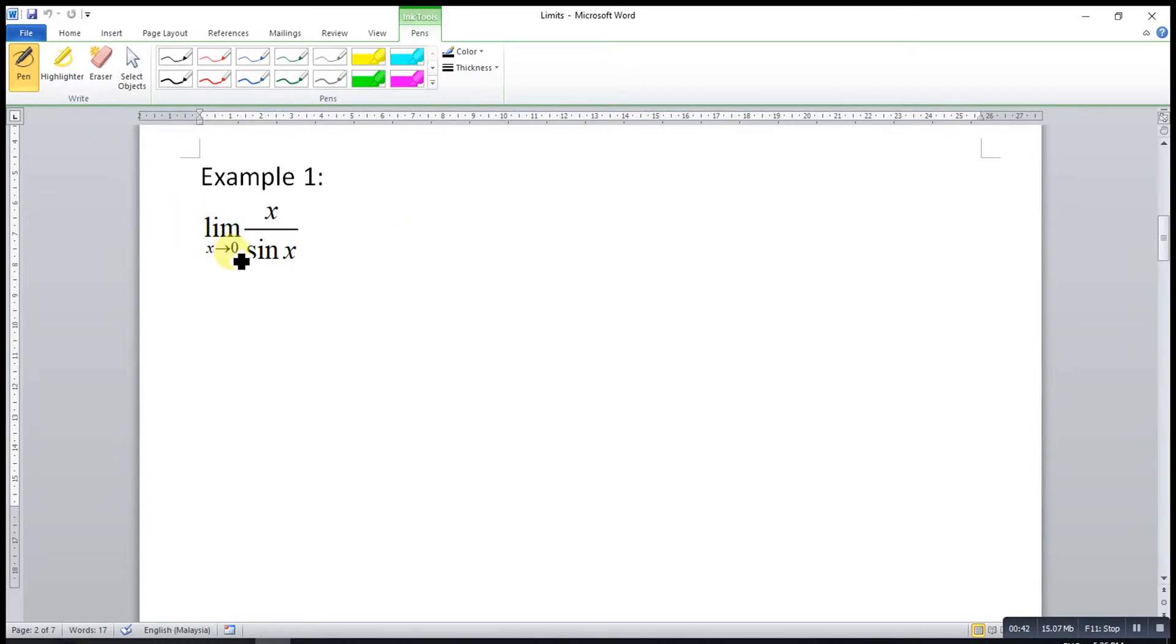If we substitute 0 to this function, the numerator will result as 0 and also the denominator. So this will give us 0 over 0. And this is called indeterminate form because we cannot give an exact value for 0 over 0.